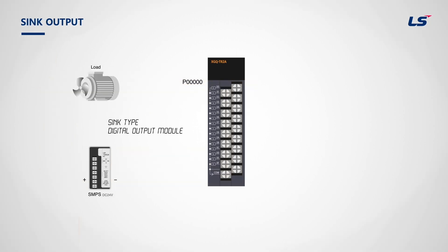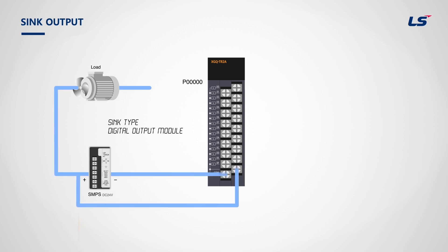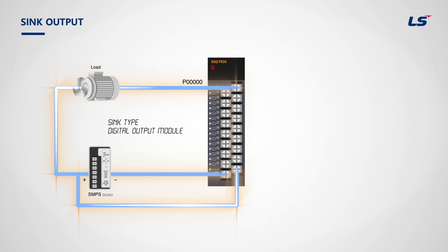This is the sink type output module. For the sink type output module, the COM terminal of the PLC output module is connected to DC 0 volts power source. The only difference between the sink type output module and input module is that the output module needs a jumper. The positive terminal is connected to 24 voltage, just like shown in this video.